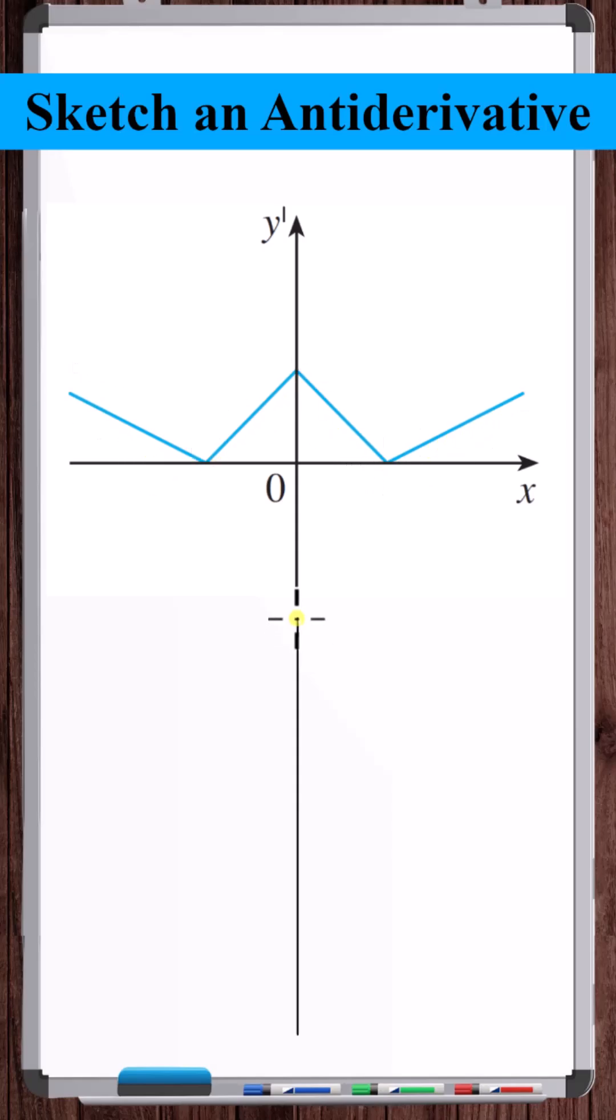Let's sketch an antiderivative of this function. Looking for key points, we see that there's a kink here, a kink here, and a kink here. Also, y prime is zero at these two points.